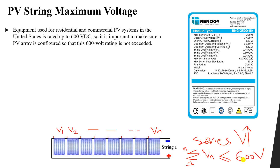In the United States, for residential and commercial PV systems, the maximum system voltage is rated up to 600V. It is important to make sure that a PV array is configured so that this 600V rating is not exceeded, according to the manufacturer or the module specifications.